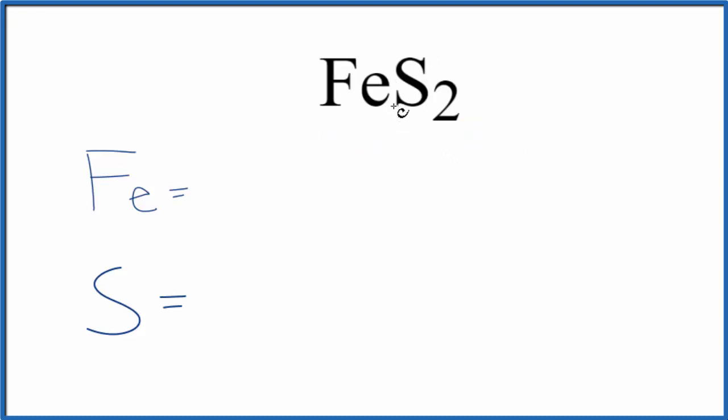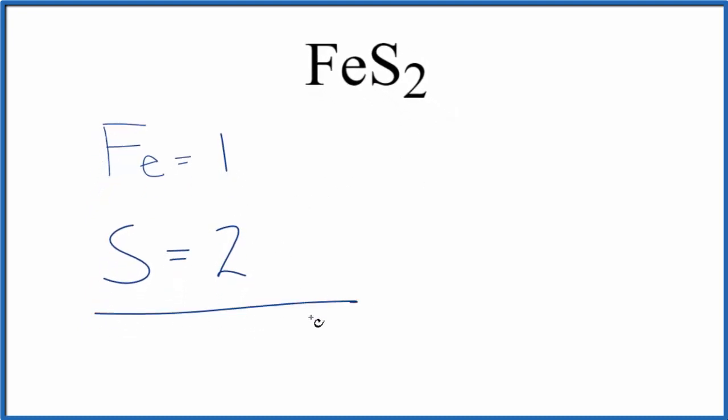So for the iron, it's not written, but we assume that there's a one there. So we have one iron atom and then two sulfur atoms. If we add these up, we have a total of three atoms in FES2.